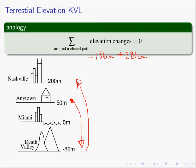We will leave Nashville and go to Miami. In doing so, we went up a negative 200 meters. And then we will leave Miami and hike back to Anytown. To do that, we had to go up 50 meters. So in this case we are adding up all of the elevation rises — we rise up negative 136 going to Death Valley.